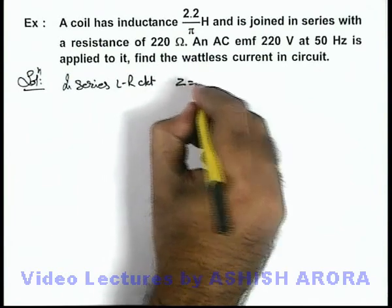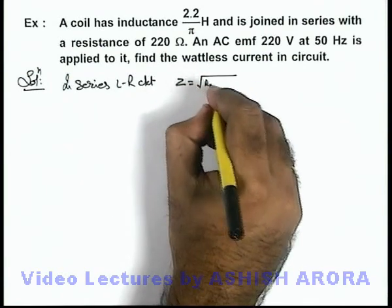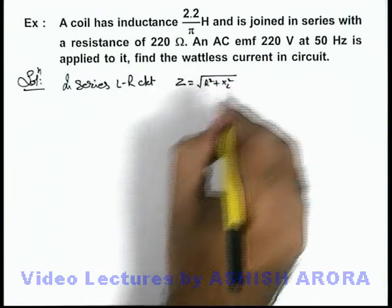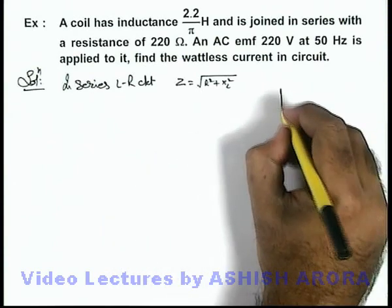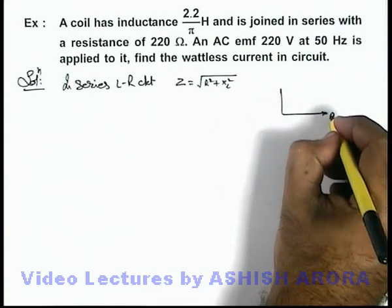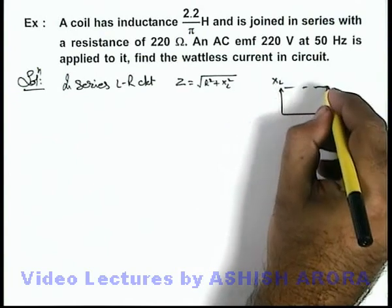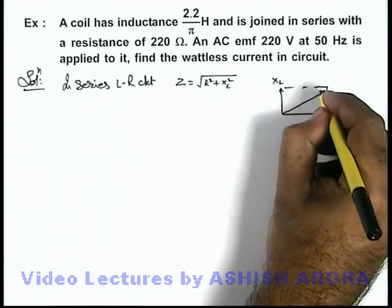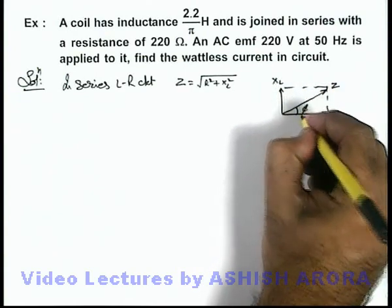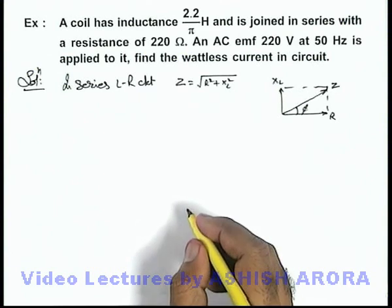Circuit impedance we know is root of R square plus XL square. And here the phasor diagram we can draw like this: this is R, this is XL, and the resulting impedance here is Z. And this angle, phase angle of impedance, is phi.